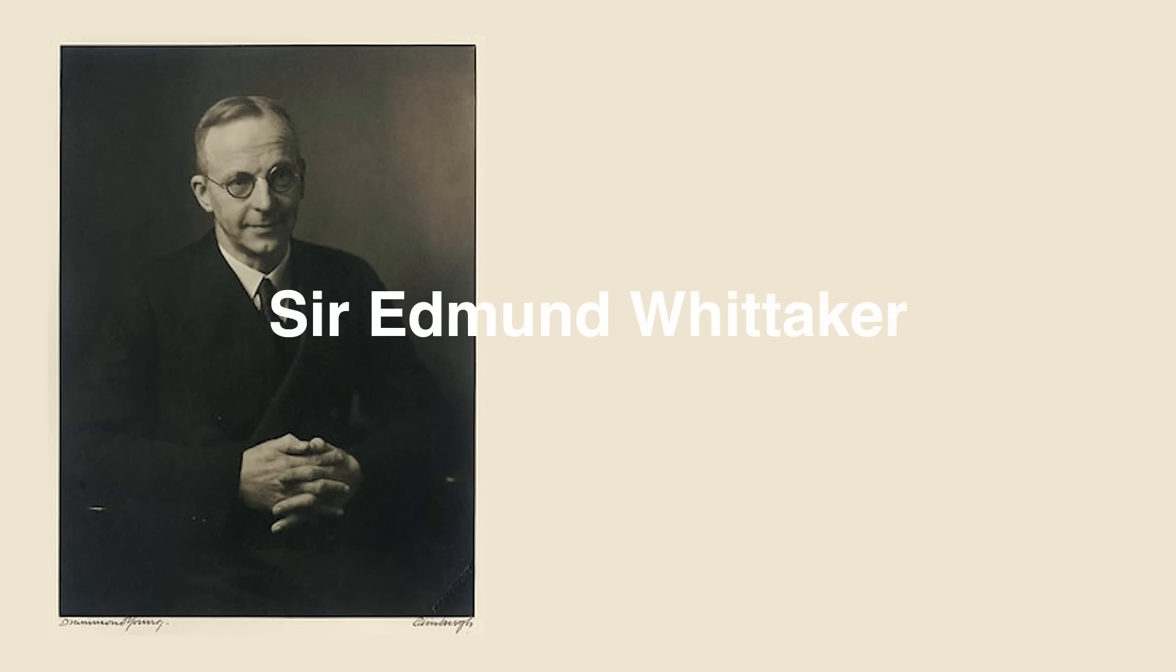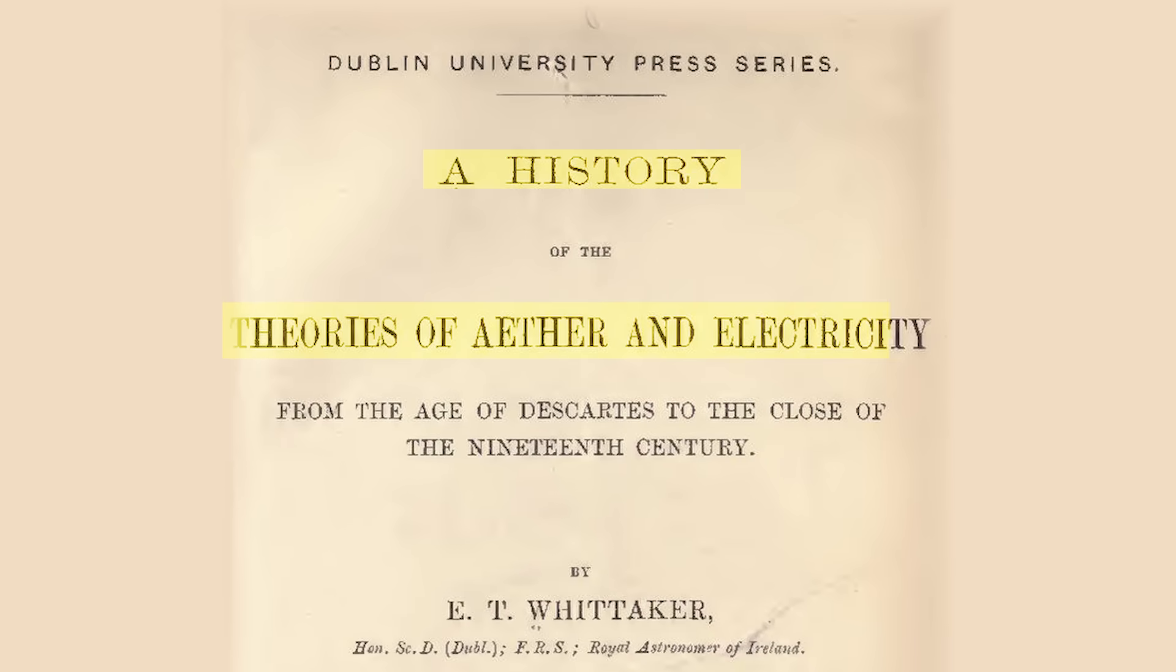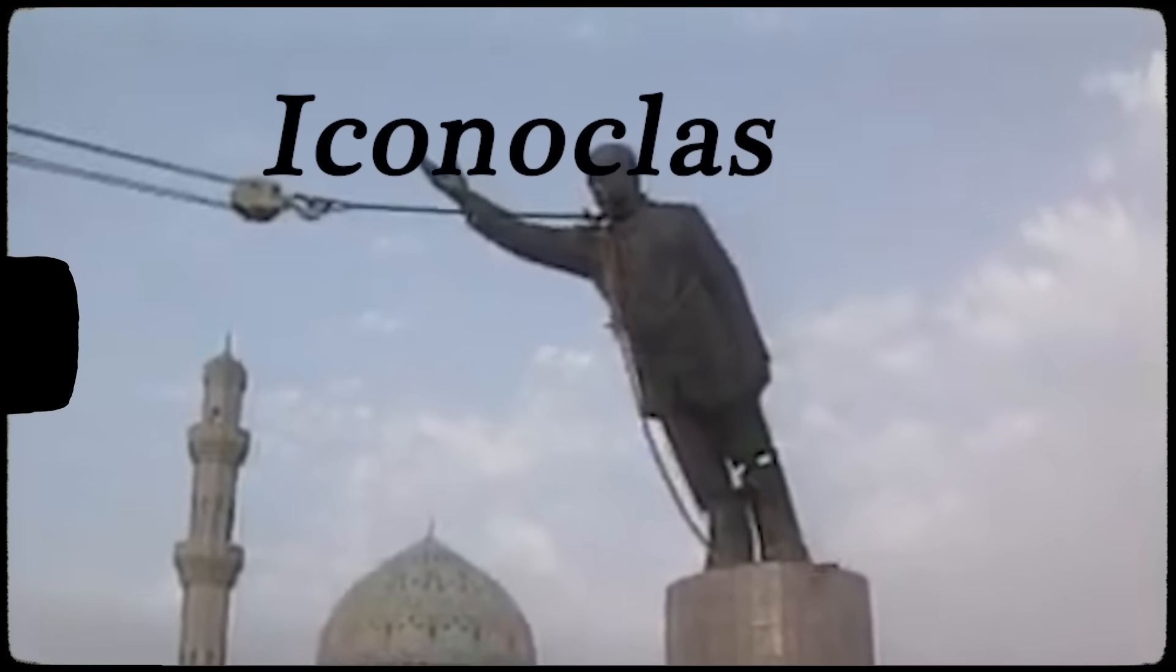In the aftermath of these revelations, the debate spilled into the academic elite. Sir Edmund Whittaker, a distinguished British mathematician and historian of science, published a revised edition of his History of the Theories of the Aether and Electricity in 1953. In it, he controversially credited Lorentz and Poincaré with the creation of special relativity, while attributing only a limited contribution to Einstein. Whittaker wasn't some bitter outsider; he was one of the most respected scientific historians of his time. His claim was based on rigorous documentation, not jealousy or iconoclasm.